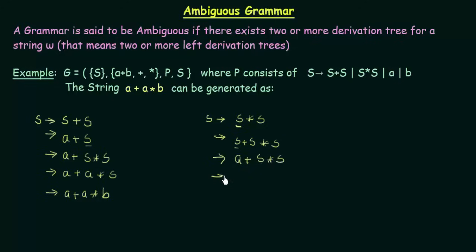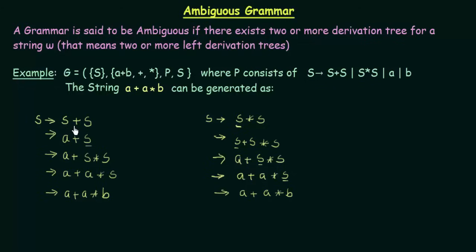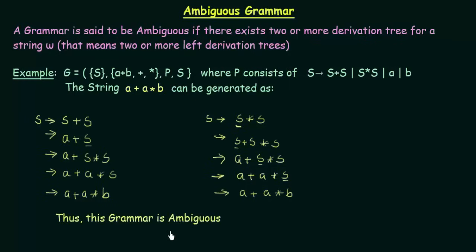Continuing, I replace the next S with A, giving A plus A*S. Then I replace the final S with B, giving A plus A*B. So we have generated the string A plus A*B again, but using a different derivation tree. We see that the string A plus A*B was generated using two different left derivation trees — first choosing S → S plus S and then choosing S → S*S — thus we can say that this grammar is ambiguous.